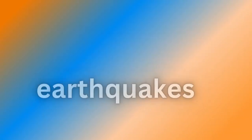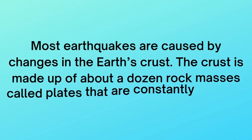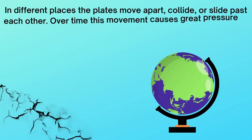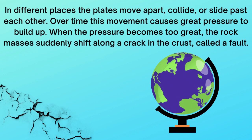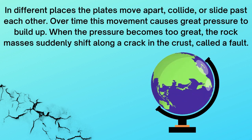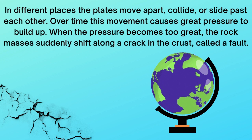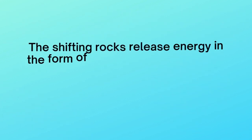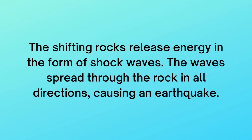Causes of earthquakes. Most earthquakes are caused by changes in the earth's crust. The crust is made up of about a dozen rock masses called plates that are constantly moving. In different places, the plates move apart, collide, or slide past each other. Over time, this movement causes great pressure to build up. When the pressure becomes too great, the rock masses suddenly shift along a crack in the crust called a fault. The shifting rocks release energy in the form of shock waves, which spread through the rock in all directions, causing an earthquake.